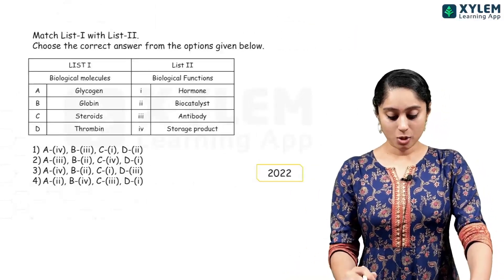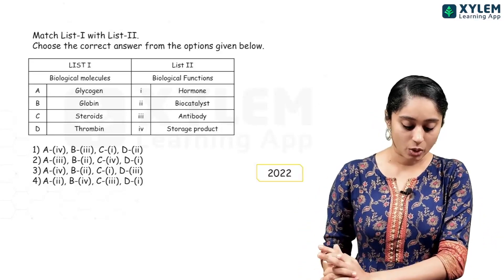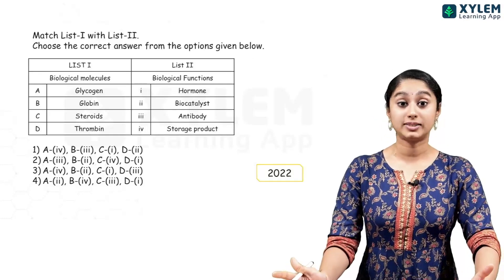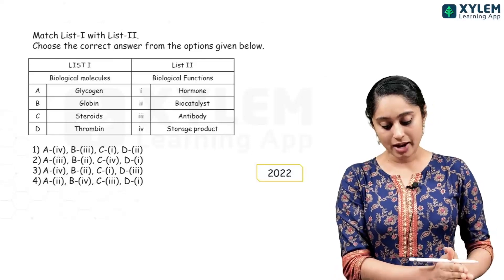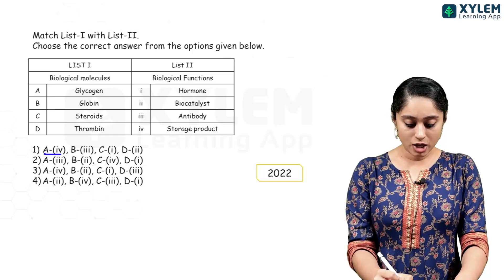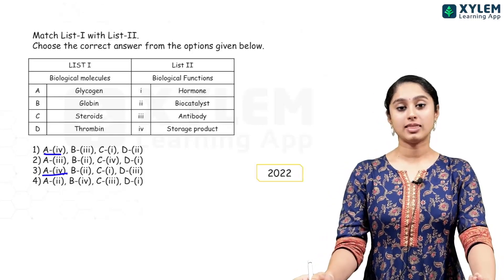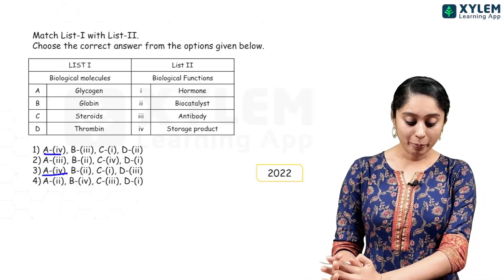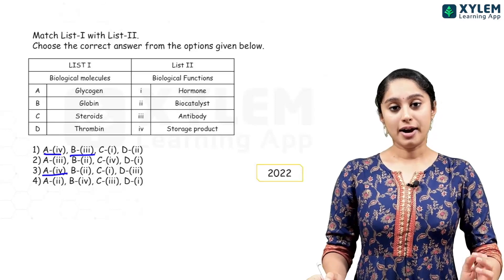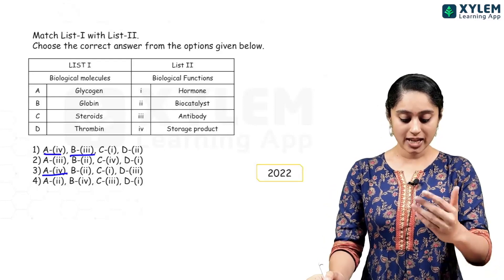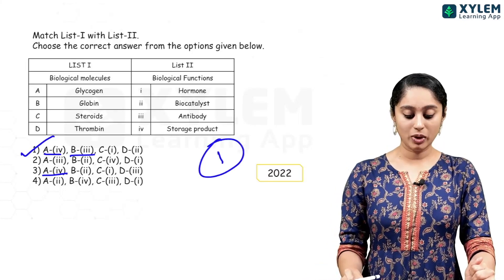This is a match the following question from 2022 — almost three questions appeared in 2022. On one side we have biological molecules and on the other side there are functions. Glycogen is a storage product, so B maps to 3. Steroids — there are steroid hormones, so steroids map to hormones. Thrombin is a biocatalyst. That's why A4, B3, C1, D2 — option 1 will be the right answer.